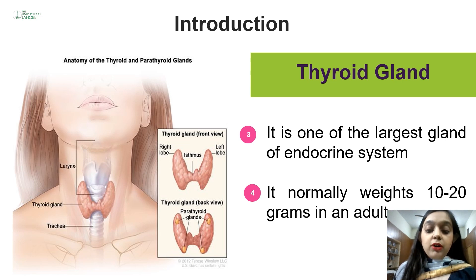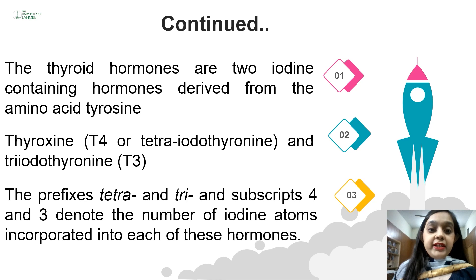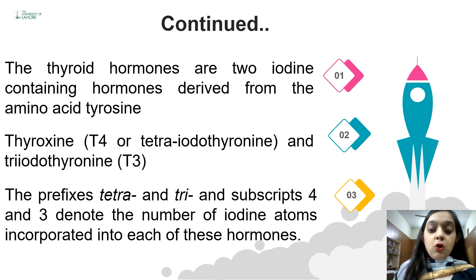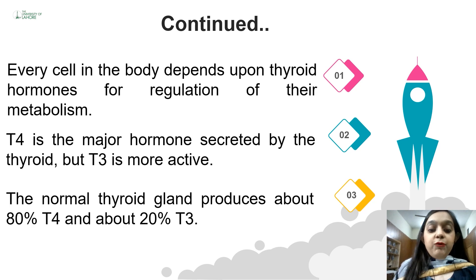The thyroid gland performs various metabolic functions in the body. There are two types of cells present in the thyroid gland: follicular cells and parafollicular cells. Parafollicular cells are also known as C cells. Follicular cells produce the two major thyroid hormones, T3 and T4. The major constituents of these hormones are iodine and the amino acid tyrosine. T3 is also known as triiodothyronine, while T4 is known as thyroxine or tetraiodothyronine. The prefixes tri and tetra denote the number of iodine atoms incorporated into each hormone.